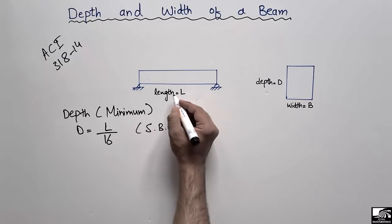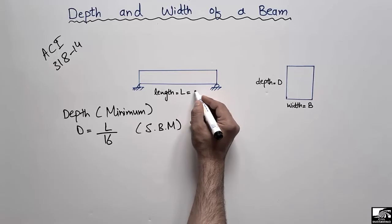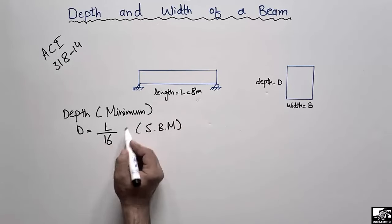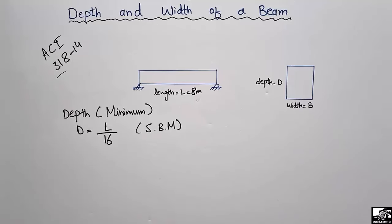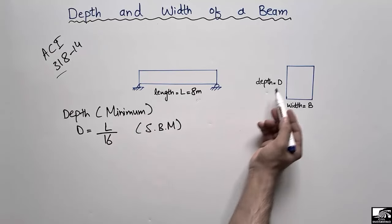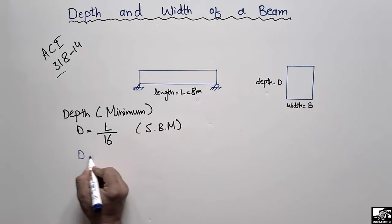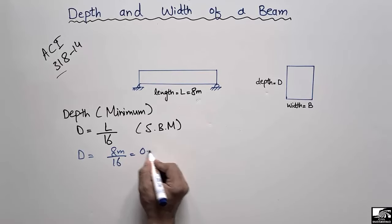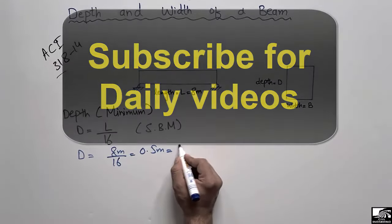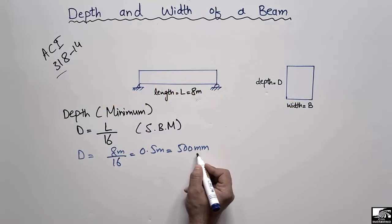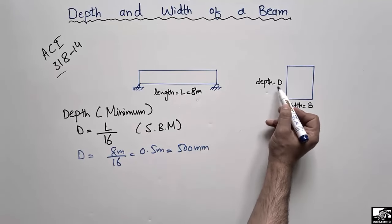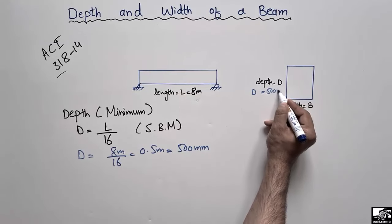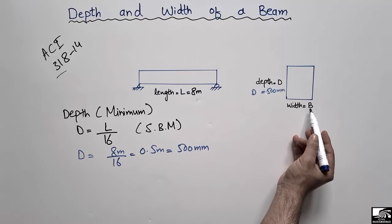Let's consider that the length of the beam is 8 meters as an example. According to the ACI 318-14 formula, the minimum thickness or depth for a beam of 8 meter length will be: L/16 = 8/16 = 0.5 meters, or 500 millimeters. So when the beam length is 8 meters, we provide a minimum thickness of 500 millimeters. Now, what will be the width for this beam?